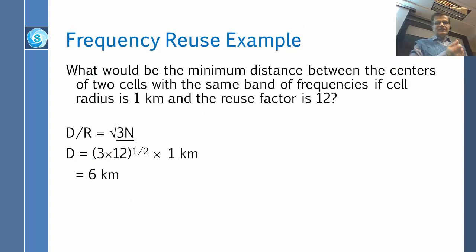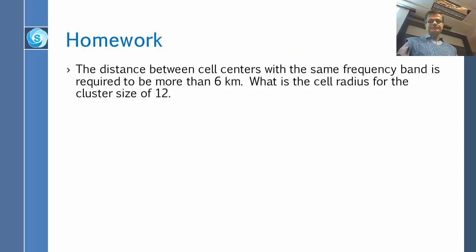Frequency Reuse Example. Here is an example that if the cell radius is 1 kilometer and the reuse factor is 12, what is the distance? You are transmitting only in 1 kilometer. So, after 6 kilometers, the same frequency will be used. The same frequency will be reused after 6 kilometers. Capital D is 6 kilometer. And you get that 6 kilometer by this formula, square root of 3N. 3 times N is 12, square root 36. Square root is easy, 6. So, homework. What is the cell radius for a cluster size of 12? Here we are trying to figure out R given D. Just the opposite of the previous problem, example.